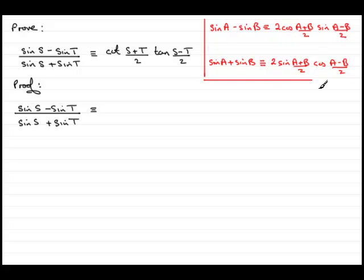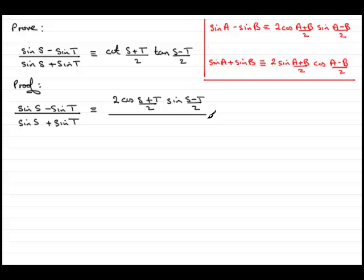Let's see how we can use these. Substituting A as S and B as T, the top becomes 2 cos of S plus T all over 2, times sine of S minus T all over 2. This is divided by the denominator, which we change using the second identity — replacing A with S and B with T — giving 2 sine of S plus T over 2, times cosine of S minus T over 2.